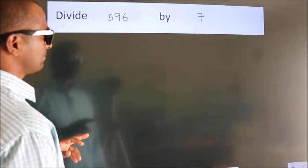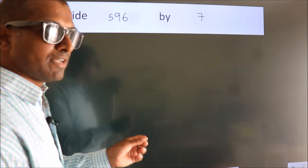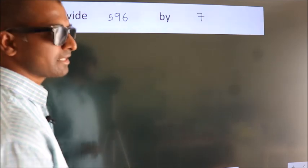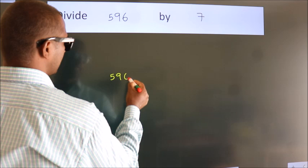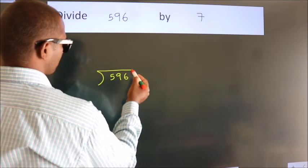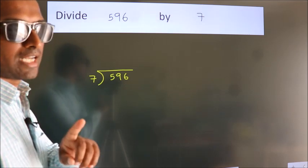Divide 596 by 7. To do this division we should frame it in this way. 596 here, 7 here. This is your step 1.